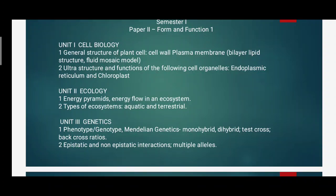The syllabus of this paper has unit first on cell biology. In cell biology, the first point is the general structure of plant cells, in which you have to study about the cell wall, plasma membrane, and different models of the plasma membrane. The second unit covers ultrastructure and functions of cell organelles like endoplasmic reticulum and chloroplast.